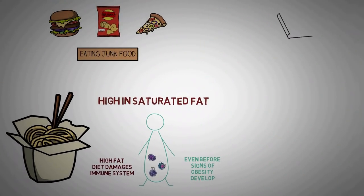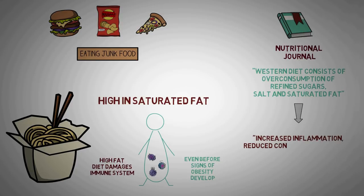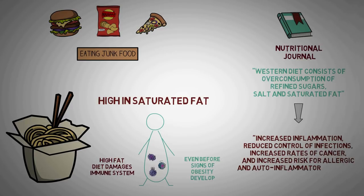A 2014 study published in a nutritional journal reports that the Western diet is characterized by an over-consumption of refined sugars, salts, and saturated fat, which has a negative impact on immunity. It can lead to increased inflammation, reduced control of infection, increased rates of cancer, and increased risk of allergic and autoimmune diseases. Cut down on fast food and choose a healthy diet instead.